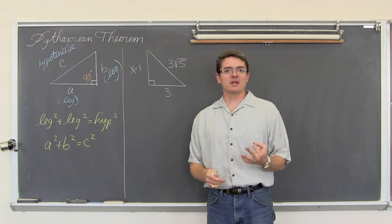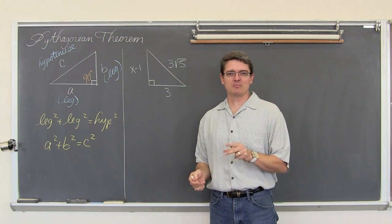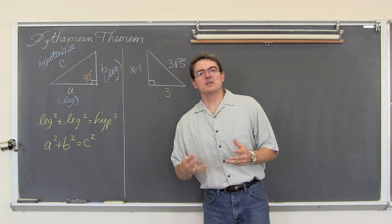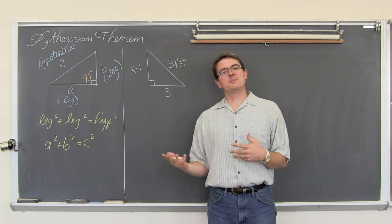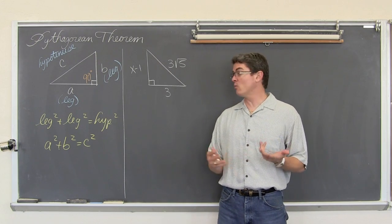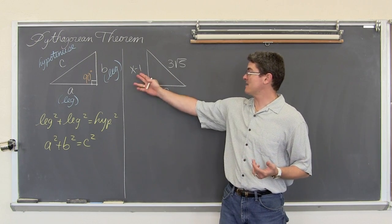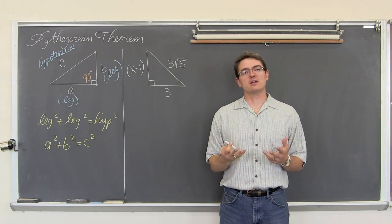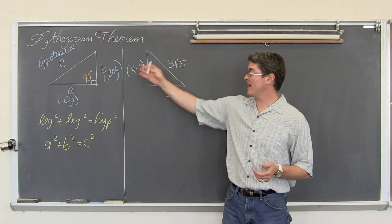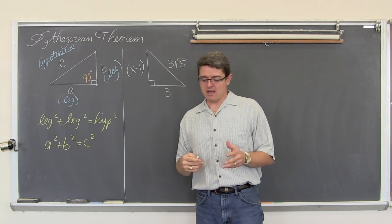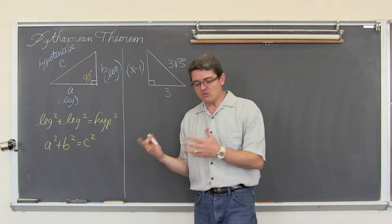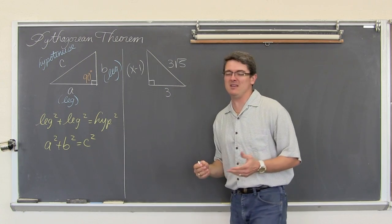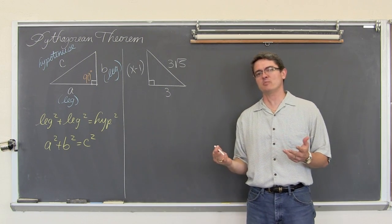These examples — I am going to do three of them. The last two are somewhat closely related to each other. We are going to do a couple of examples that have some algebra involved where one missing side is not just a variable but an algebraic expression.